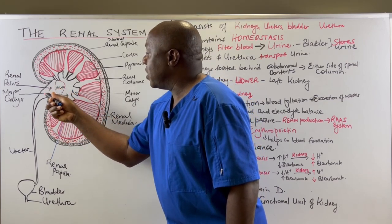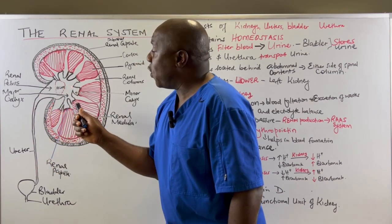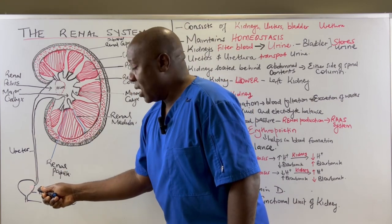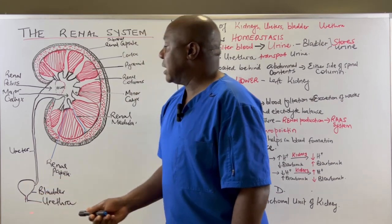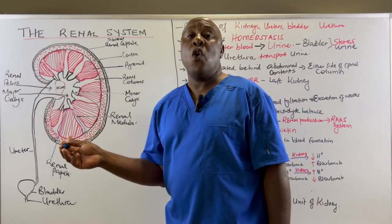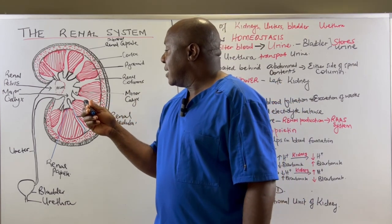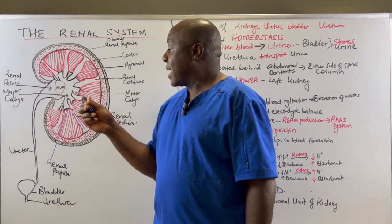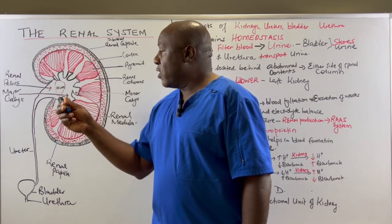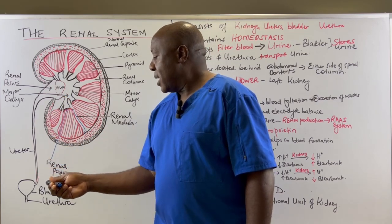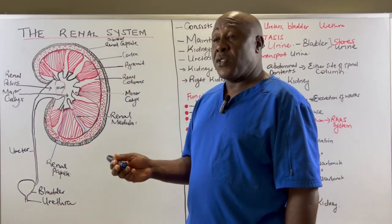The renal pelvis leads down to the ureter, which transports urine formed in the kidney to the bladder. The bladder stores that urine until it is appropriate time for it to leave our bodies. The flow of urine after it has been formed: it exits the renal papilla into the minor calyx, then from the minor calyx into the major calyx, then into the renal pelvis, flows down the ureter, and is stored temporarily in the bladder before leaving our bodies through the urethra.